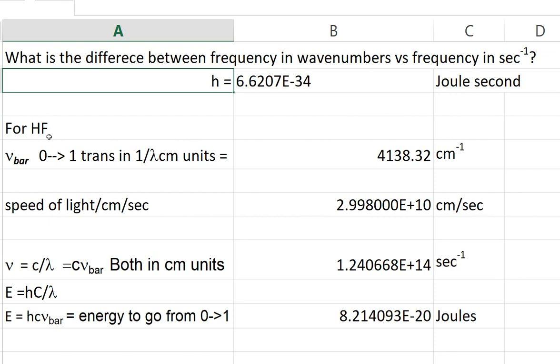We're going to use as an example hydrogen fluoride. The frequency in wavenumber I'm going to call nu bar. For the zero to one transition of HF in one over lambda centimeter units, which is wavenumbers, the value is 4138.32 centimeters to the minus one. That's the frequency in wavenumbers you would get in an infrared spectrophotometer for the zero to one transition.